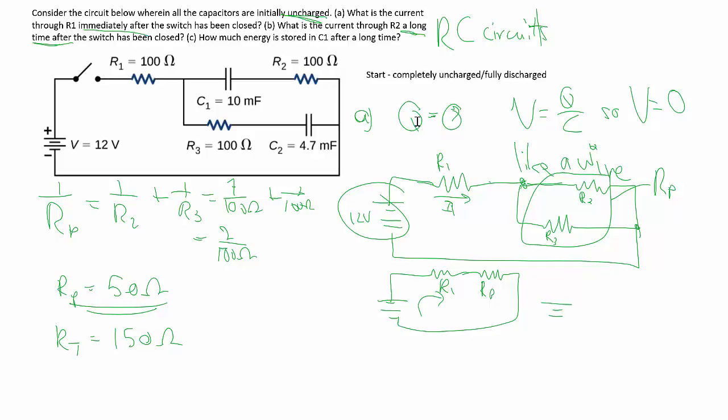Given that, because in the series the total current is the same as the current through the first resistor, you can find that out very easily using I equals V over R. The total voltage is 12 volts divided by 150 ohms and you get 0.08 amps. So that's how much current passes immediately after the switch has been closed.